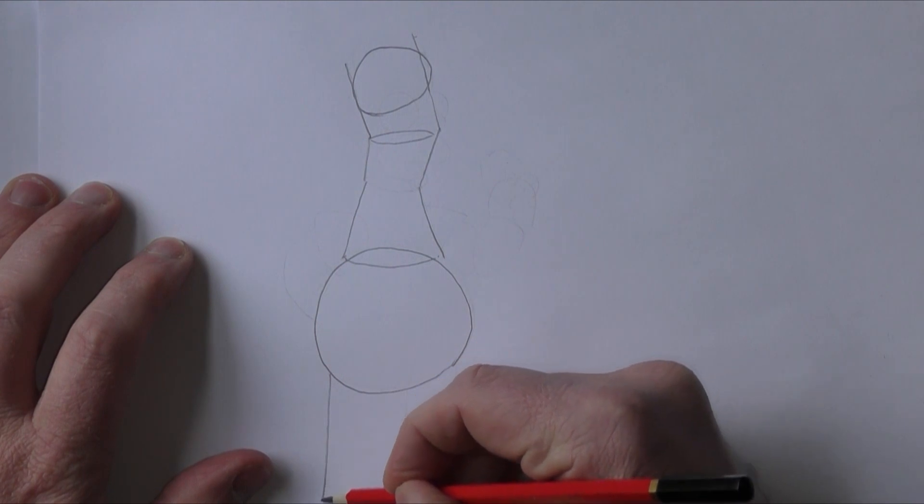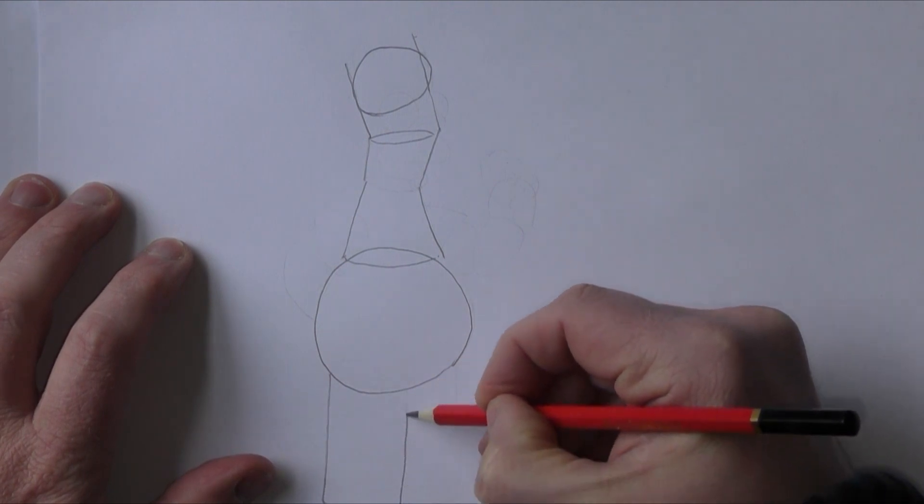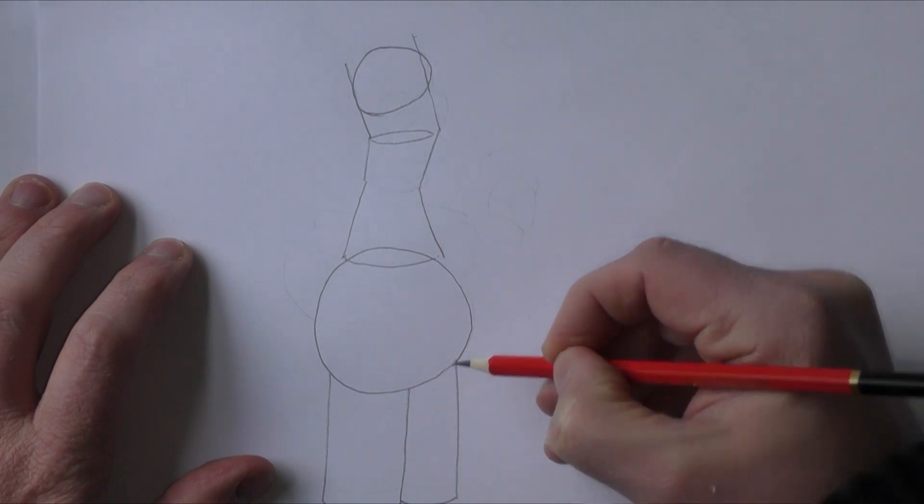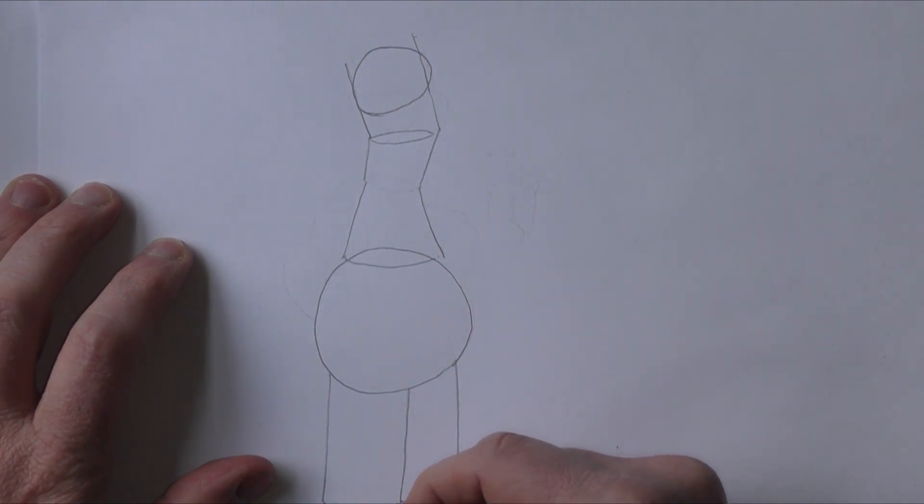Now what we need to do is just draw a couple of legs. Again just basic shapes just so we can get the outline and where it needs to be. And I'll draw his feet there on the bottom, just finishing the second one off. There we go.